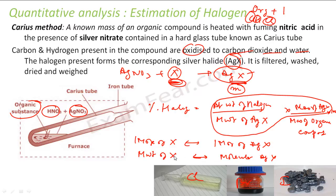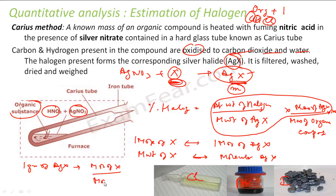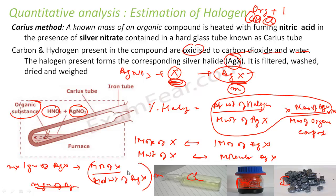Suppose the molecular weight of X is 80 — let's assume it's bromine. So 80 grams of bromine will give 188 grams of AgX (silver bromide). That means 1 gram of AgX corresponds to 80/188 grams of X. And if you get M grams of AgX, that implies (80/188) × M grams of halogen.